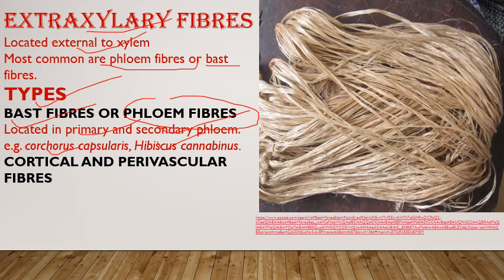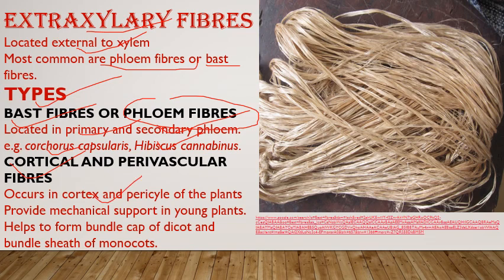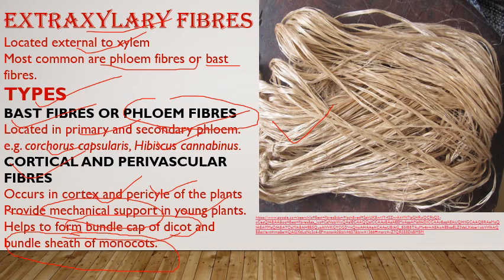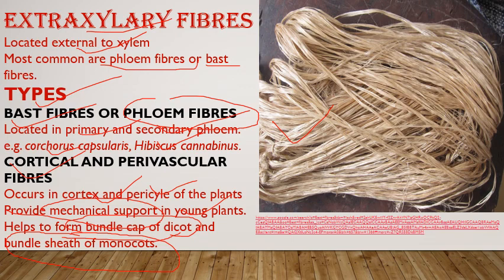Cortical fibers are present in the cortex; perivascular fibers are present in the pericycle. Their function is to provide mechanical support to young plants. They help form bundle caps in dicots and bundle sheaths in monocots, providing protection to vascular bundles. Jute fiber is also known as soft fiber; hard fiber is coir — the fiber of coconut, known as coir. This concludes today's lecture. Thank you, have a nice day.